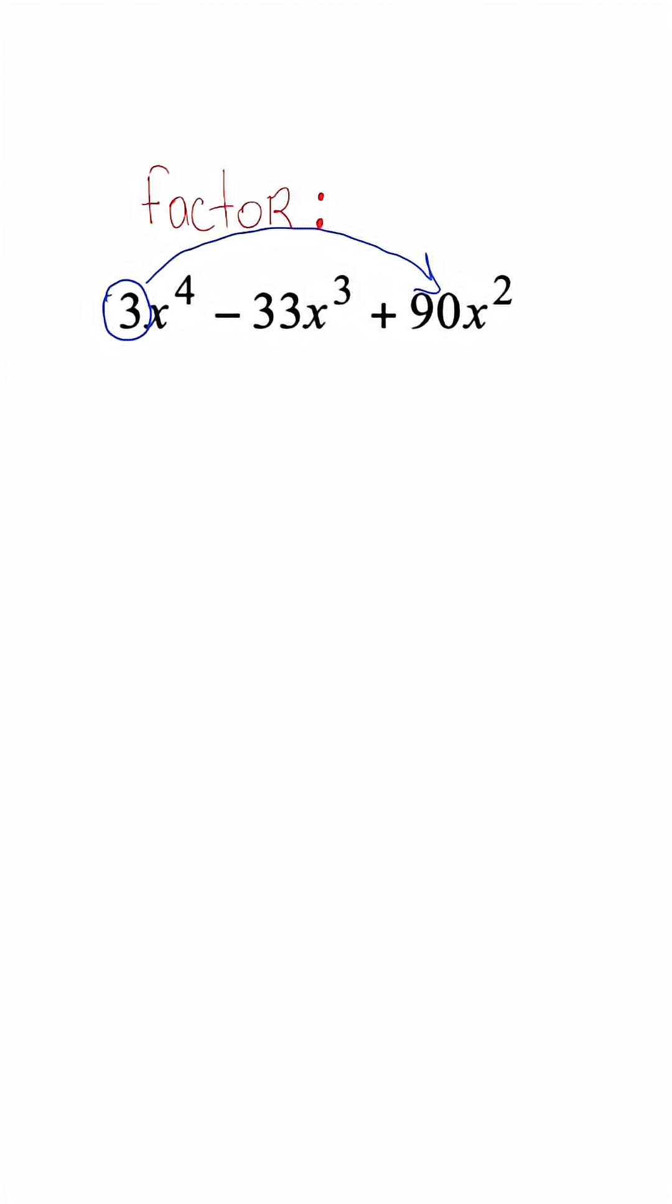So here we're able to pull out a GCF of 3x to the second power. And once we take that out, we're left with x squared minus 11x plus 30. So now when we focus on what's inside the parentheses,